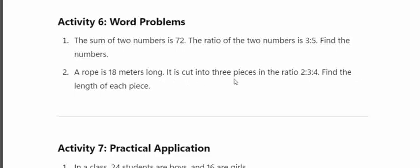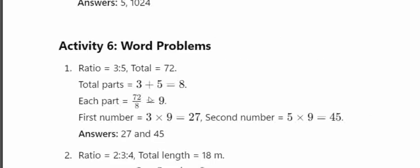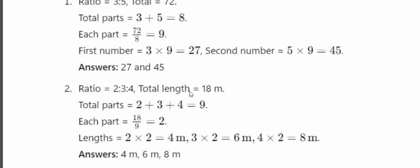A rope is cut into 3 pieces in the ratio 2 is to 3 is to 4. Find the length of each piece. Adding the ratio: 2 plus 3 plus 4 equals 9. Dividing 18 by 9 gives 2 meters per part. The pieces are 4 meter, 6 meter, and 8 meter.